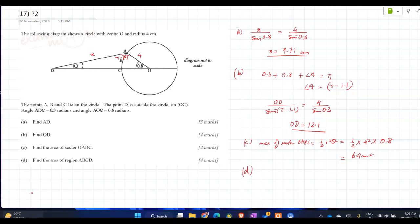Okay. Then area of A, B, C, D? There will be area of the whole triangle. Nice direction. Perfect. Very good. Area of triangle O, A, D. You can use any two sides and the included angle. I would say use the sides that are given.